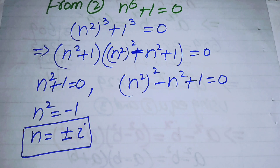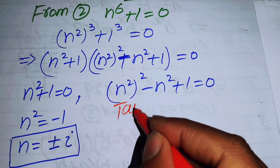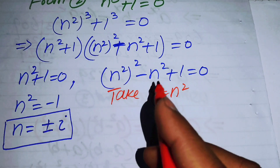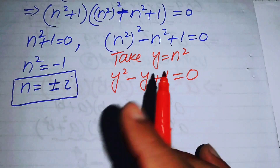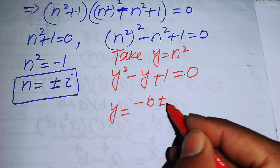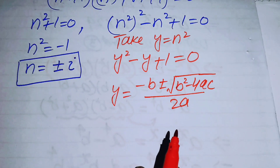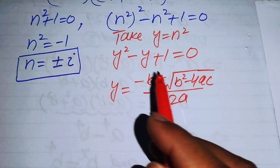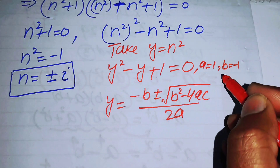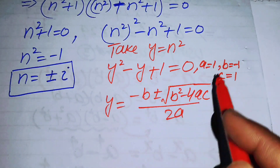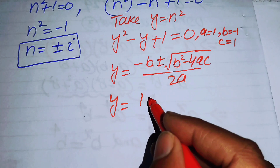For the second case, n^4 - n^2 + 1 = 0, we convert to quadratic form by substituting y = n^2, giving y^2 - y + 1 = 0. Using the quadratic formula with coefficients a = 1, b = -1, c = 1, we get y = (1 ± √(1 - 4)) / 2.